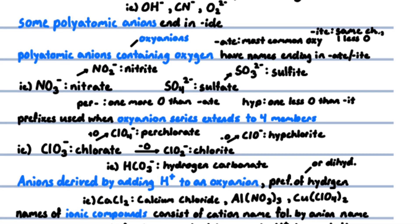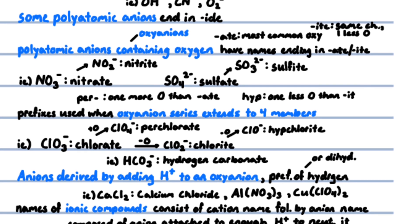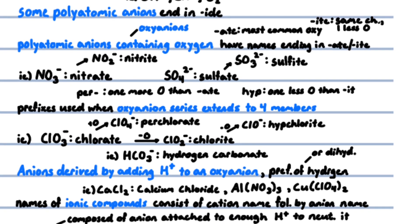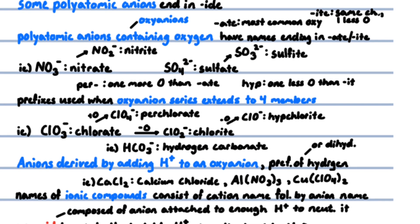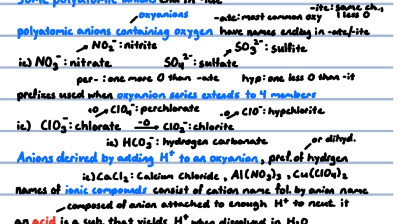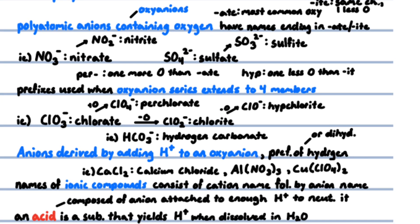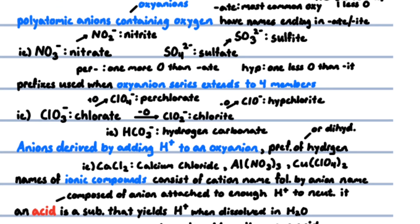An acid is a substance whose molecules yield hydrogen ions when dissolved in water. An acid is composed of an anion connected to enough hydrogen ions to neutralize or balance the charge. Acids containing anions whose names end in -ide are named by changing the -ide to -ic, adding the prefix hydro- to the anion name, and adding acid.